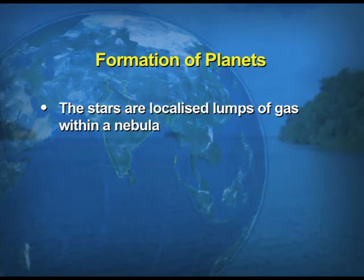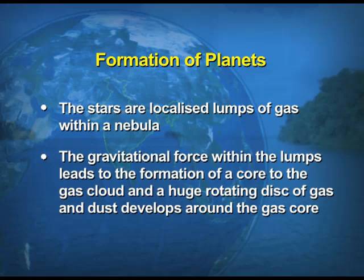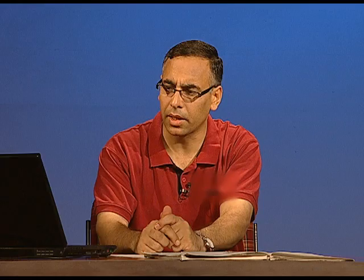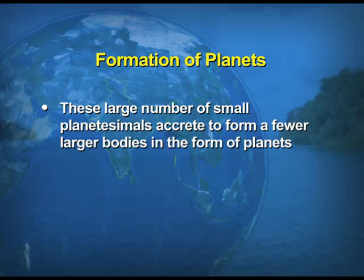Let us have a look at the stages in the formation of the planets. In the first stage, stars are localized lumps of gas within a nebula. The gravitational force within the lumps leads to the formation of a core, and a huge rotating disk of gas and dust develops around the gas core. In the next stage, the gas cloud starts getting condensed and the matter around the core develops into small rounded objects. These small rounded objects, by the process of cohesion, develop into what are called planetesimals. Larger bodies start forming by collision and gravitational attraction causes the materials to stick together. In the final stage, a large number of small planetesimals coalesce to form fewer larger bodies in the form of planets.